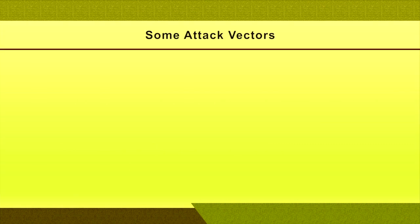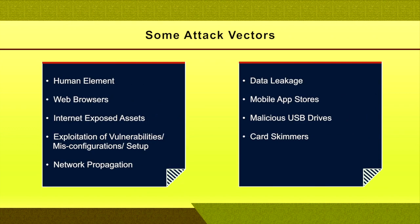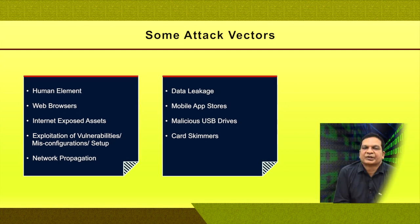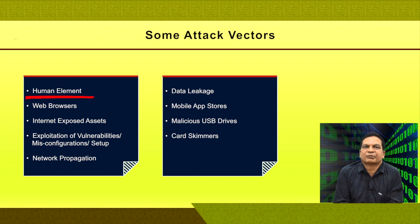Attack vectors are the platforms or places through which hackers initiate hacking or attacks. These include the human element, web browsers, internet-exposed assets, exploitation of vulnerabilities or misconfigurations, network propagation, data leakage, mobile app stores, malicious USB drives, and card skimmers. The human element involves social engineering — using people as the starting point for an attack.